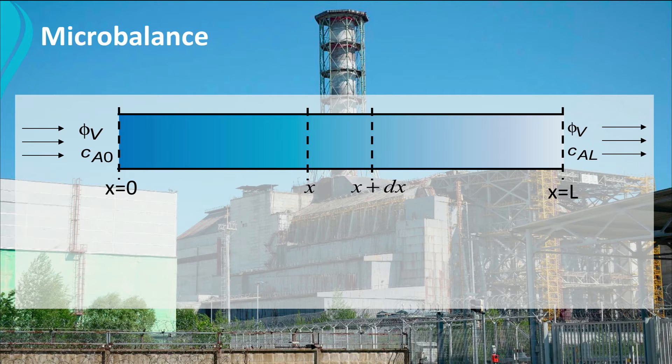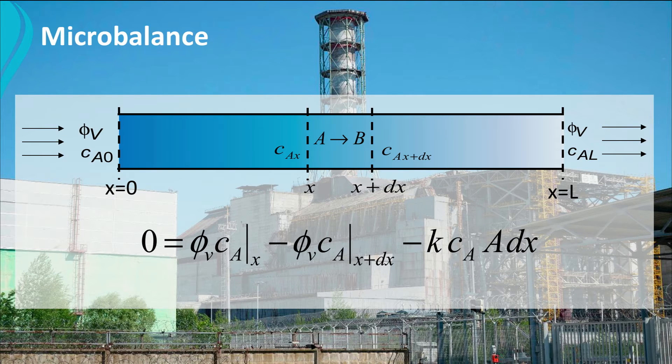In this small volume the concentration at x is CAx and becomes CAx plus dx. If the volume flow rate is constant and we assume a first-order reaction in this volume, we can write the steady-state microbalance as follows. This is the basis of a microbalance.